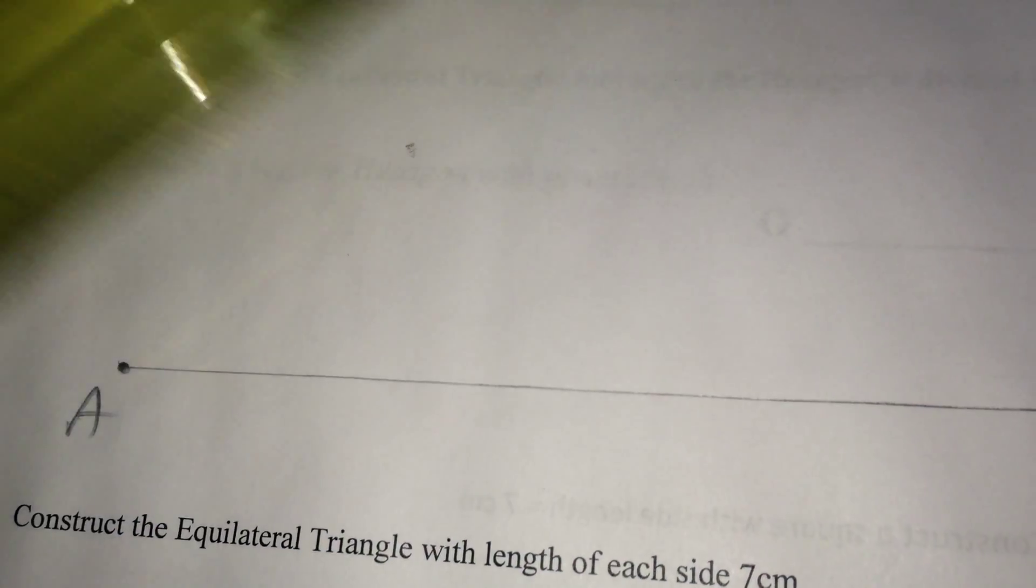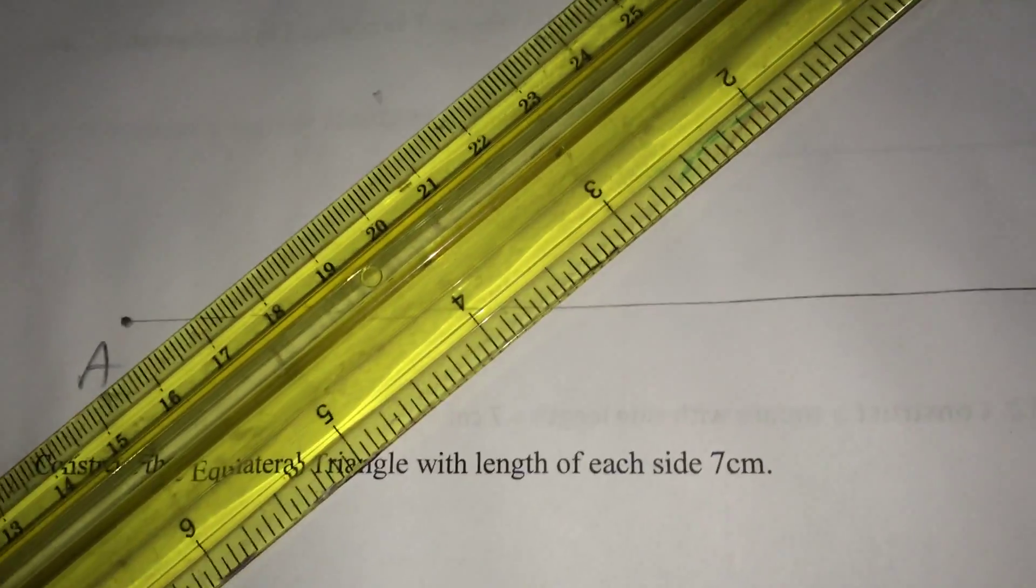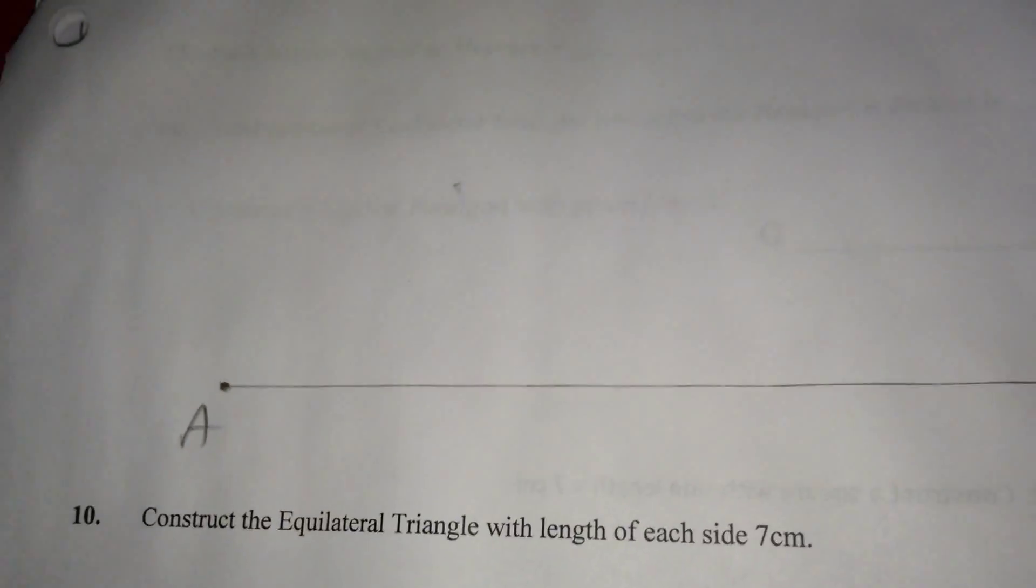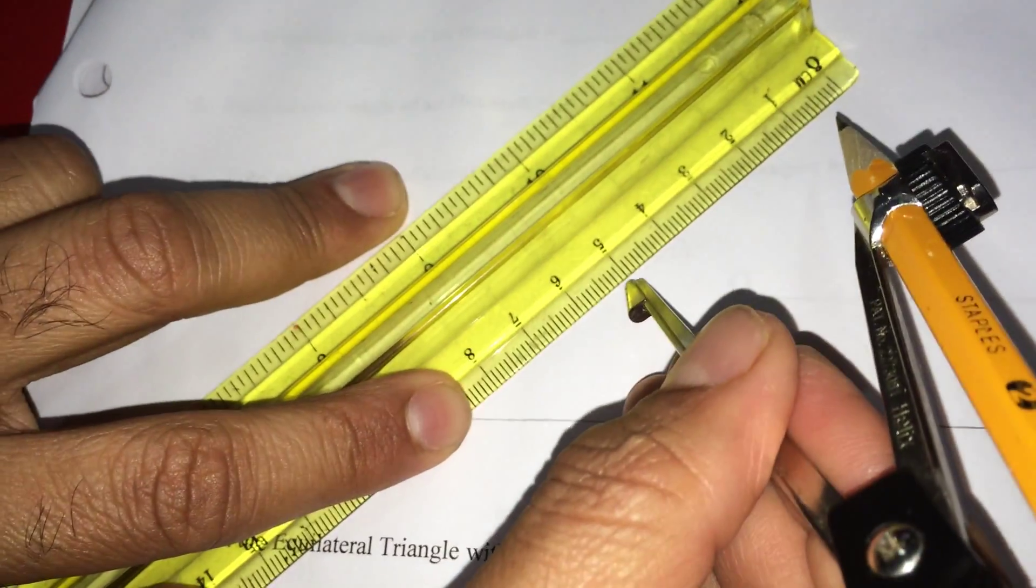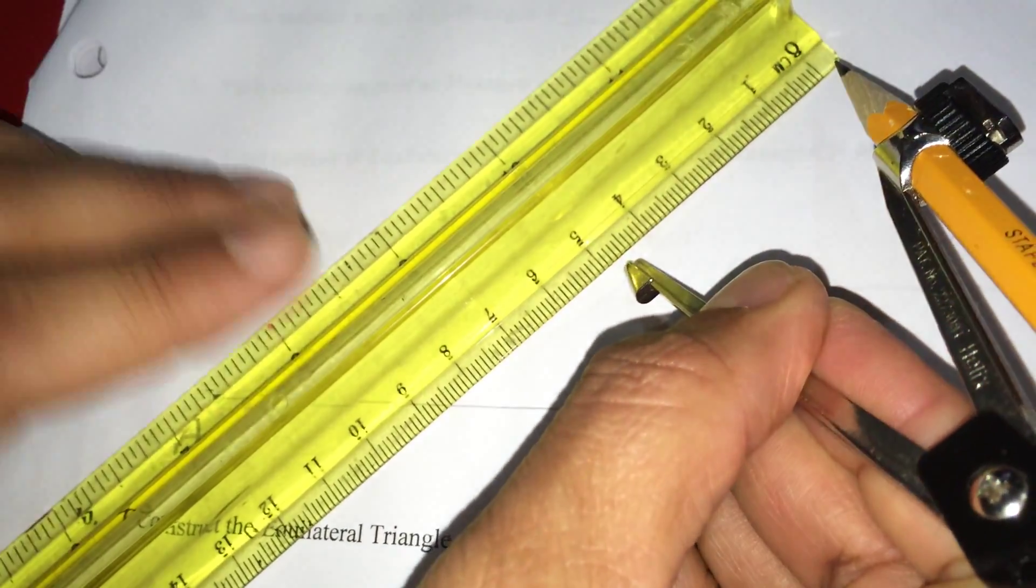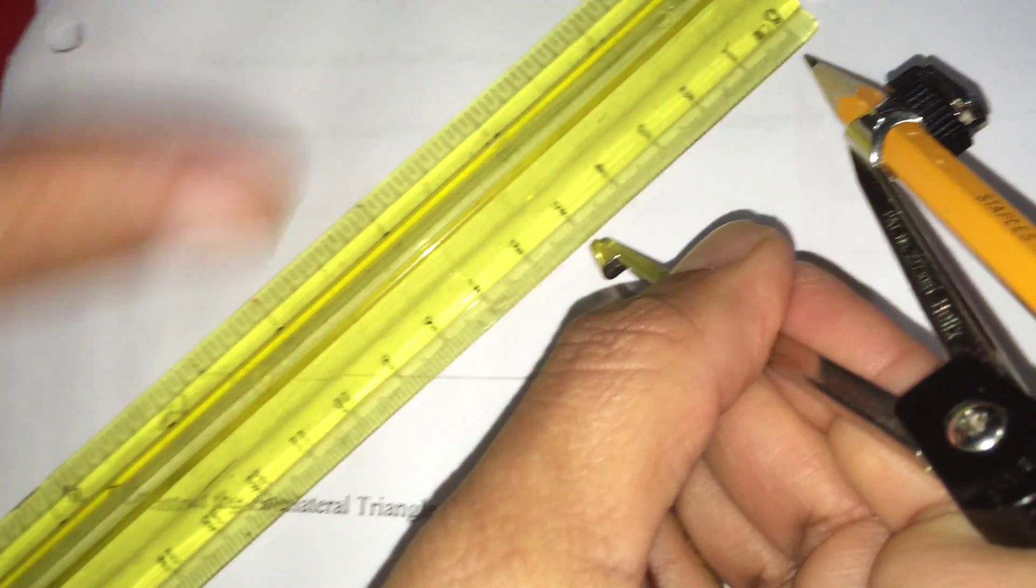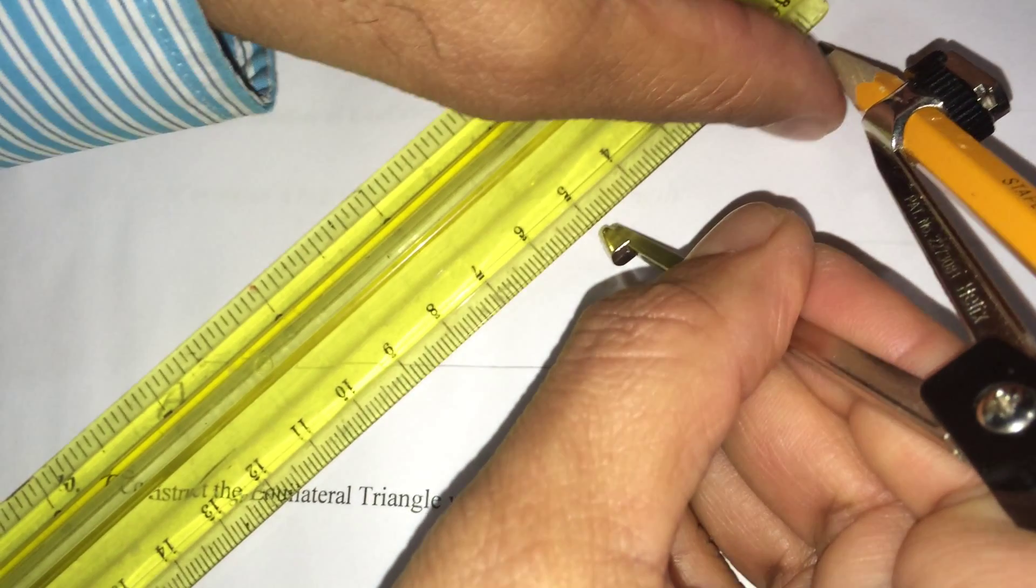Next, since it is 5 cm, I take on the ruler 5 cm. This is 5 here, from 5 to 0. If we go, that will be exactly 5 cm. Let me adjust this.